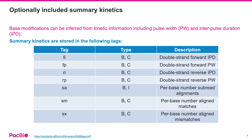If the summary kinetics are optionally retained, they are stored in the HiFi reads BAM tags. Specifically, the fi and ri tags store the forward and reverse interpulse duration kinetics. The fp and rp tags store the forward and reverse pulse width kinetics, and the sa, sm, and sx tags store the subreads alignment, matches, and mismatches respectively.